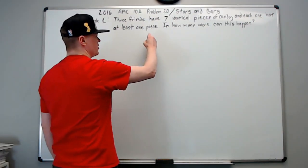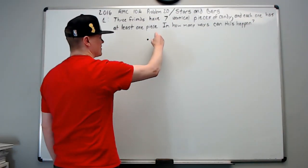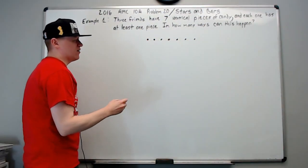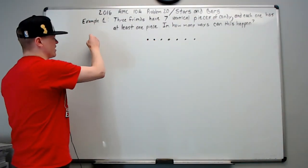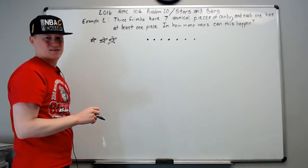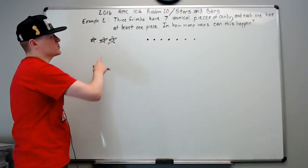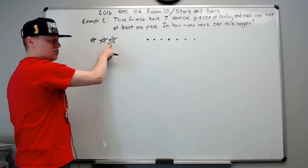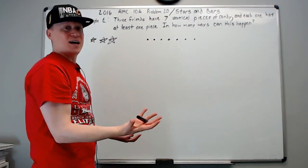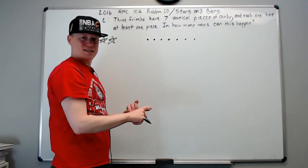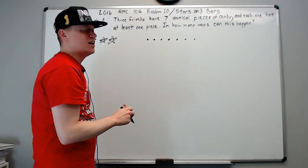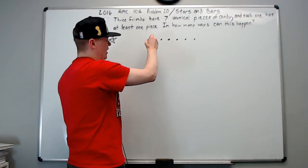All you're going to do is picture the pieces of candy as dots — we made seven dots on the board. Alternatively, you could make seven stars, but the bars are dividers. Sticks, chopsticks, dividers, bars — all the same thing. We're going to place them among the dots: one here and one here.